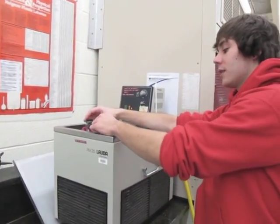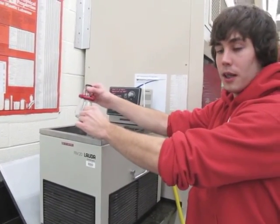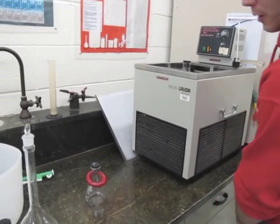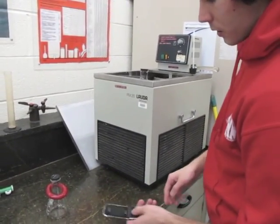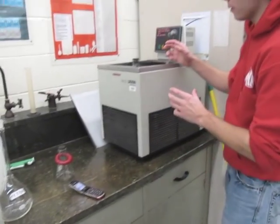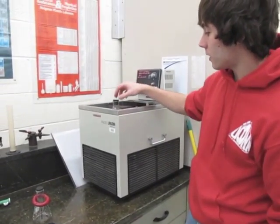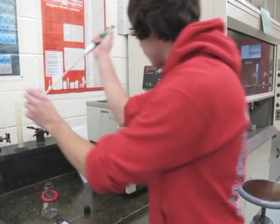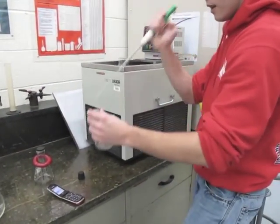After your initial titration, you're going to combine the contents of both flasks into one flask. At the same time, you're going to record the time that you combine them, that way you know how long the reaction is going for. Every two minutes, you're going to draw a 10 milliliter sample and then titrate it like you did the initial titrations.